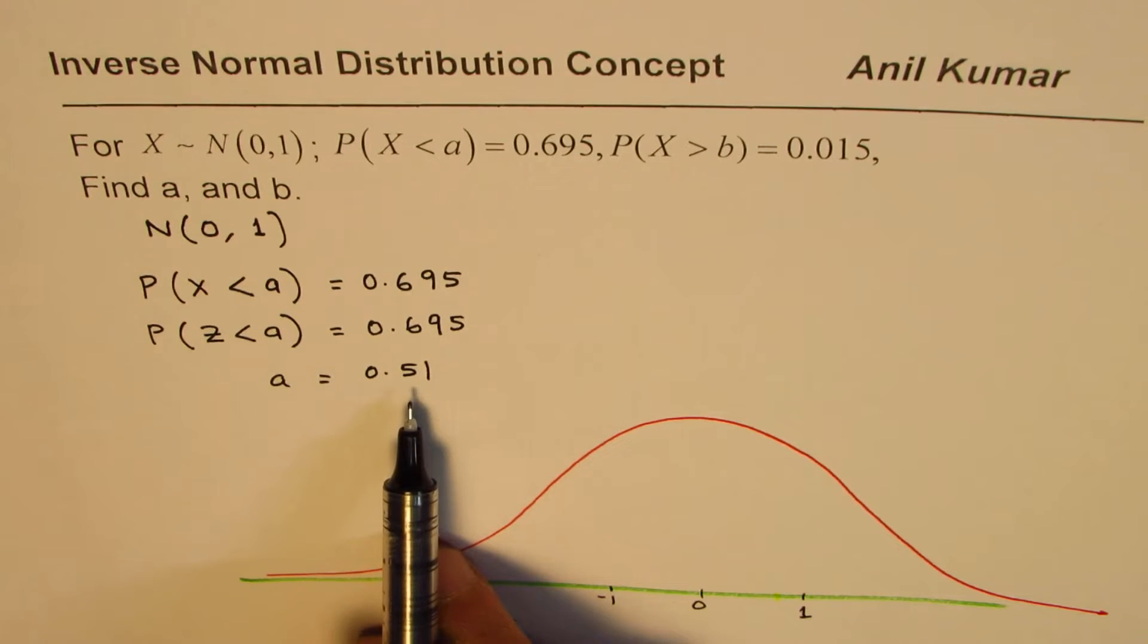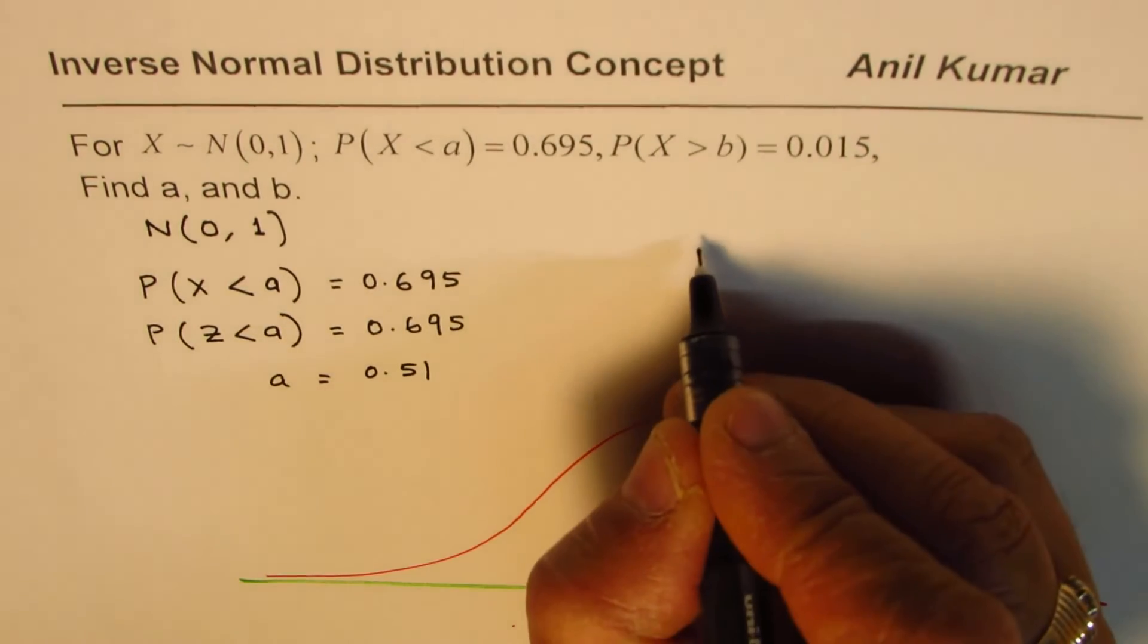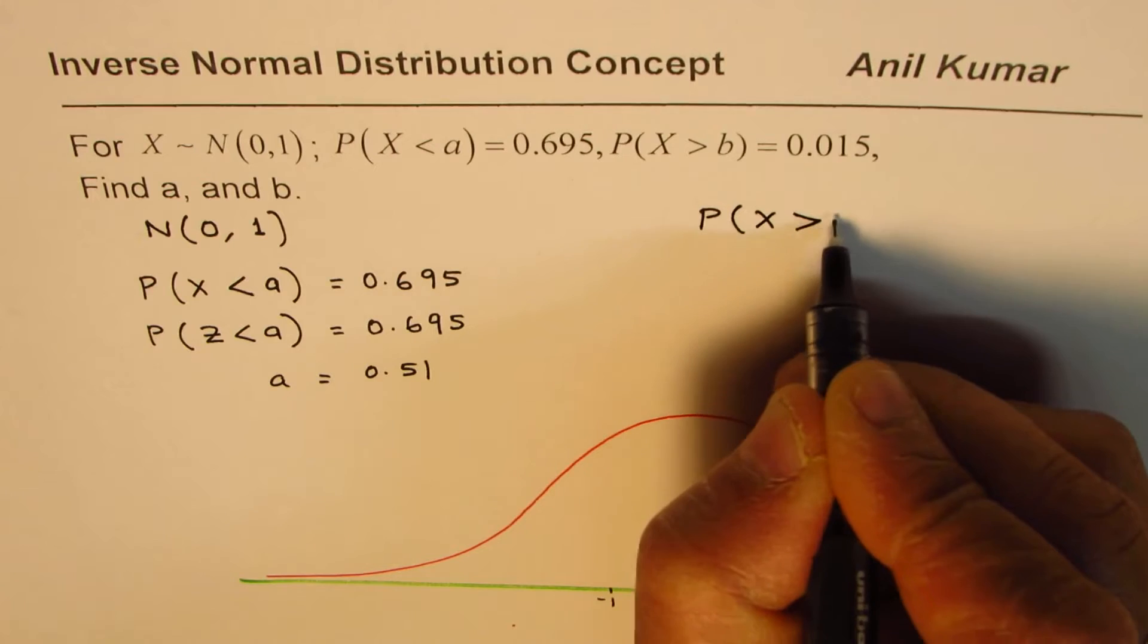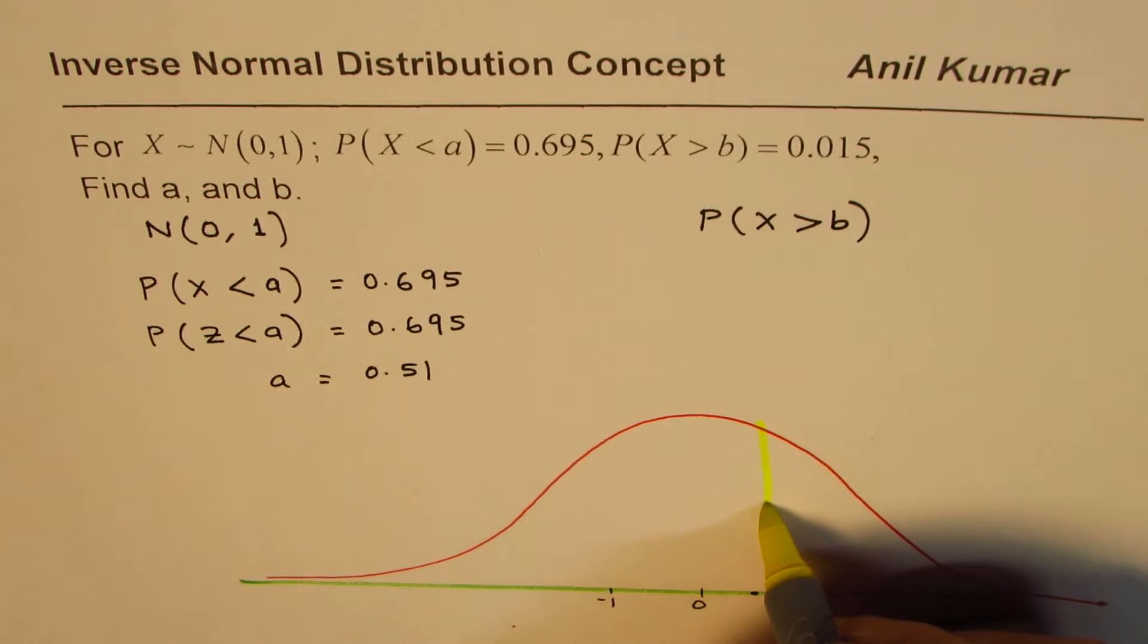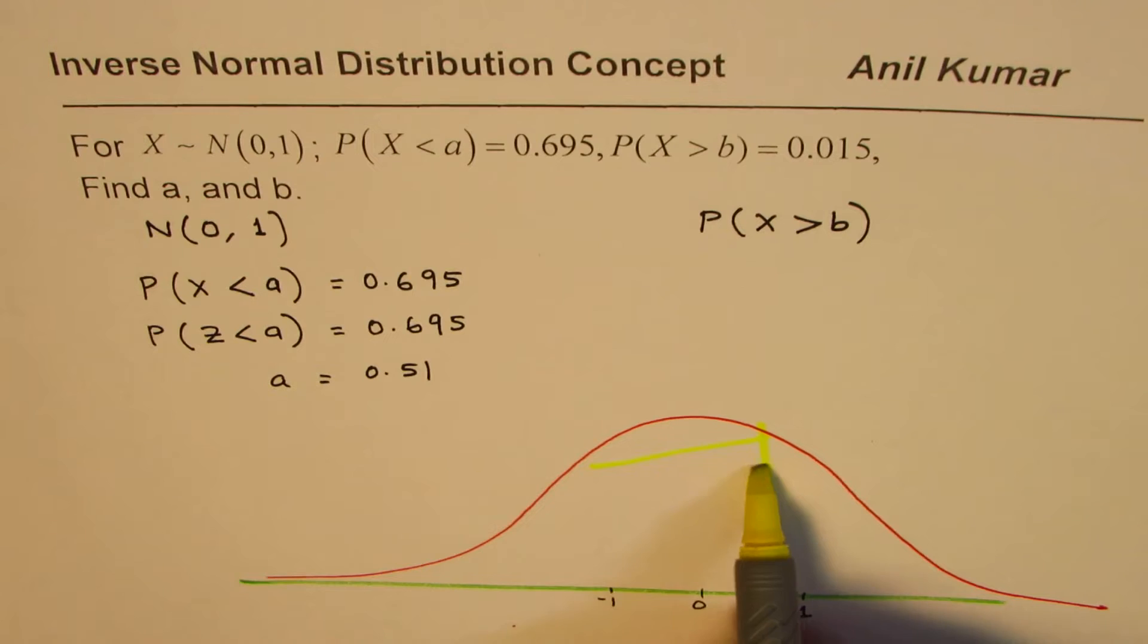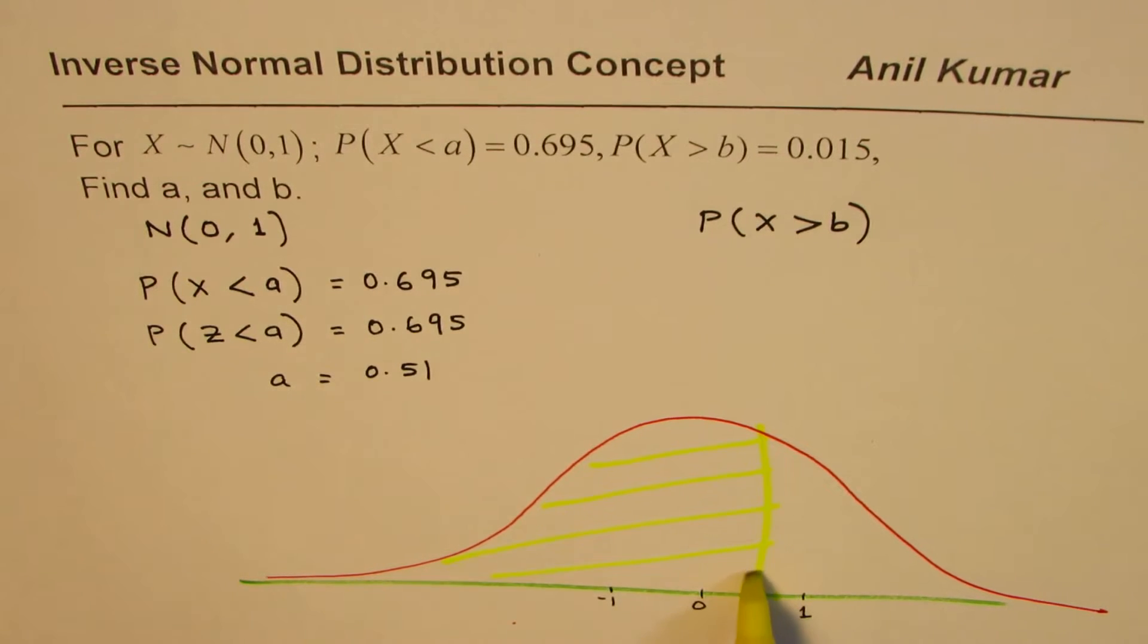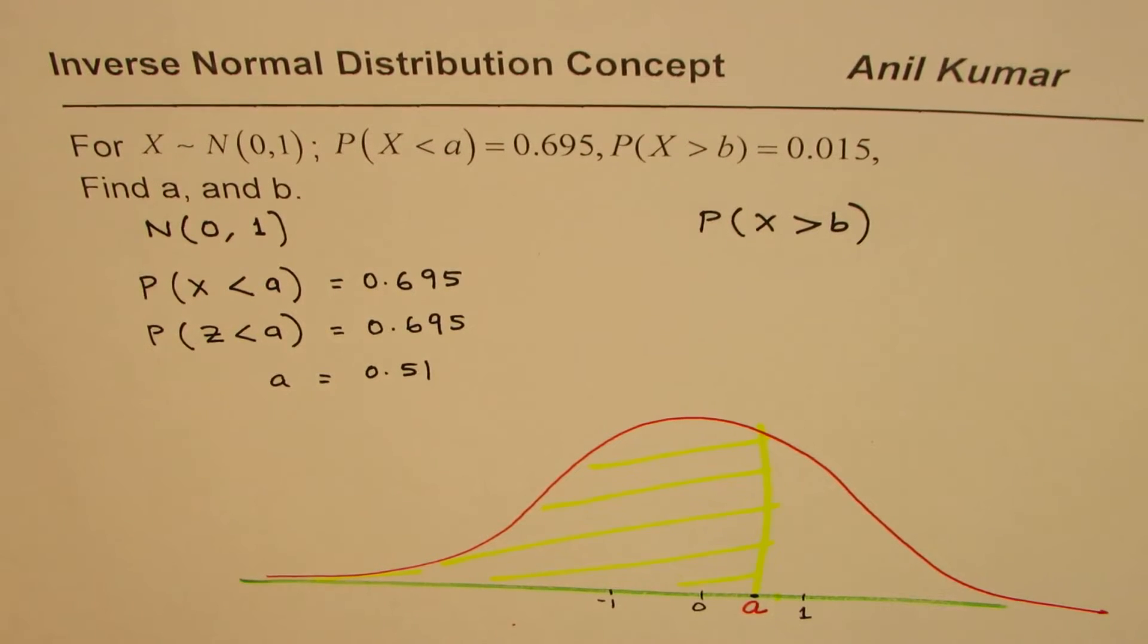Now, let's look into the value for the other one, which is probability of X greater than b. Let me plot this here between 0 and 1 somewhere right in the middle we are talking about. So we are saying this is a for us. When you say less than a, we are saying this portion. This portion of the graph we are talking about, all this going up to this place. And the point which we found a, this is a for us, 0.51.